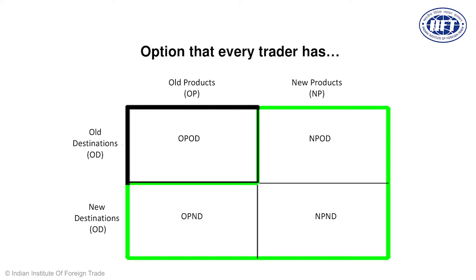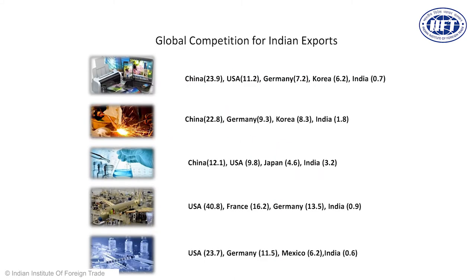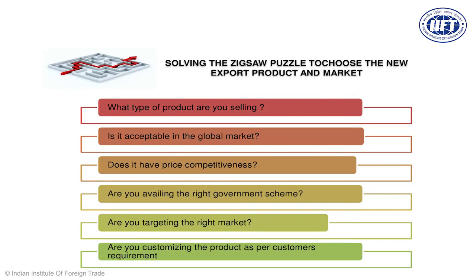Taking the old product, old destination (OPOD) example further: in the chemicals sector, China captures almost 12% of total exports, the US captures 9.8%, and India 3.2%. Other countries are doing the same product — whether it's steel or electronics, the competition is huge. So how do you ensure your company is picked up and you get business in these markets against these three levels of competition? Let's solve this jigsaw puzzle: how to choose a new product and how to choose a great market for your product.